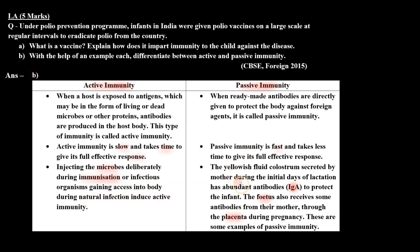For passive immunity examples: the yellowish fluid colostrum, secreted by the mother during the initial days of lactation, has abundant antibodies IgA to protect the infant. The fetus also receives some antibodies from the mother through the placenta during pregnancy. These are examples of passive immunity.